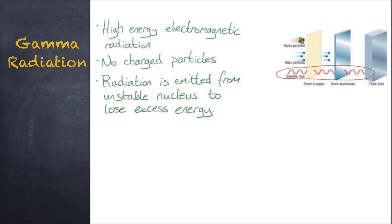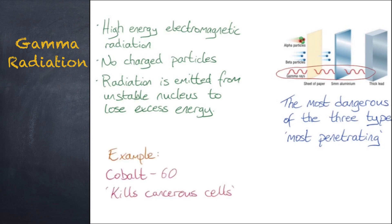Gamma radiation doesn't consist of any charged particles. It is high energy electromagnetic radiation. An unstable nucleus emits gamma radiation to get rid of excess energy. The most dangerous type of radiation of the three due to its high penetrating power. It can only be stopped by thick lead. Cobalt-60 is an example of gamma radiation, and it is used to help kill cancerous cells.